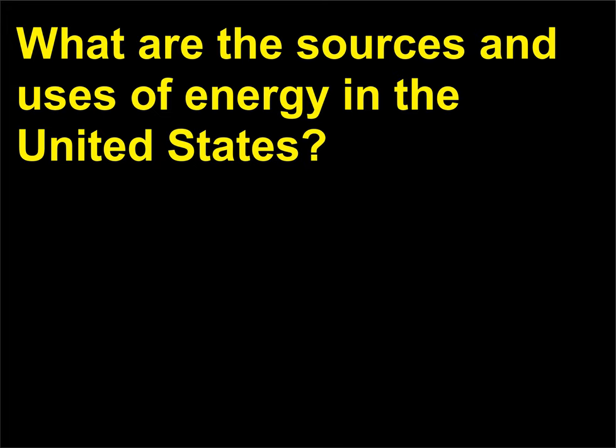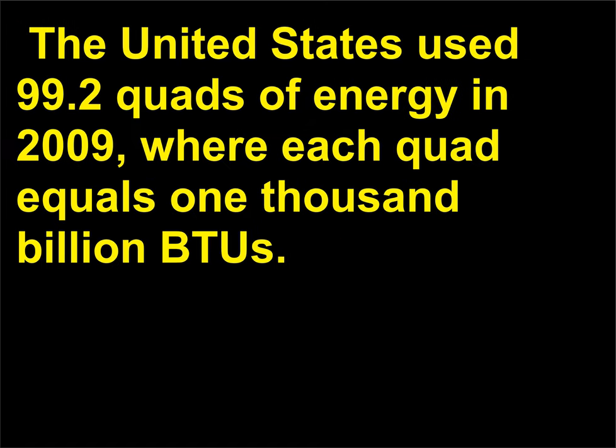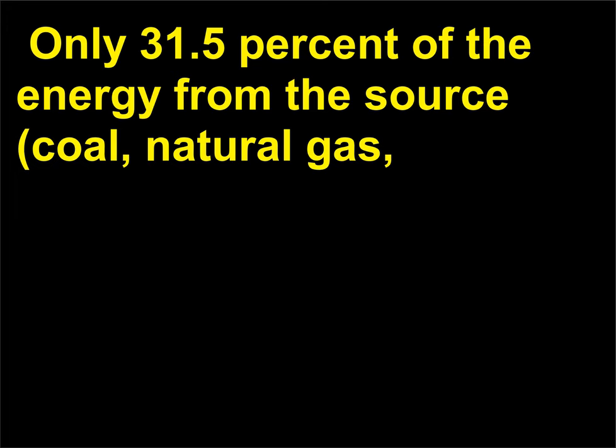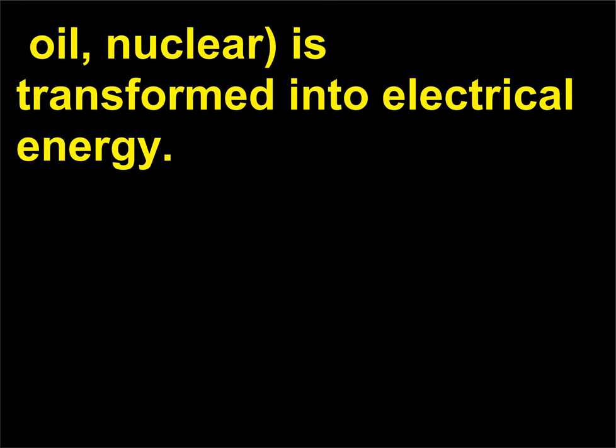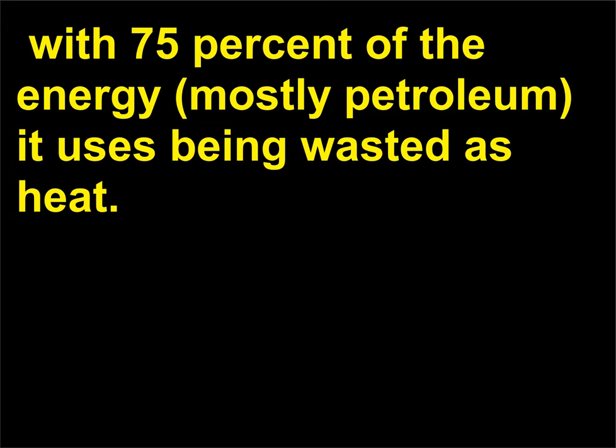What are the sources and uses of energy in the United States? The tables below explain how much energy the United States uses per source and where the energy is used. The United States used 99.2 quads of energy in 2009, where each quad equals 1,000 billion BTUs. Electrical generation, 39.97 quads, is very inefficient. Only 31.5% of the energy from the source—coal, natural gas, oil, nuclear—is transformed into electrical energy. The transportation industry is also wasteful in terms of energy, with 75% of the energy, mostly petroleum, it uses being wasted as heat.